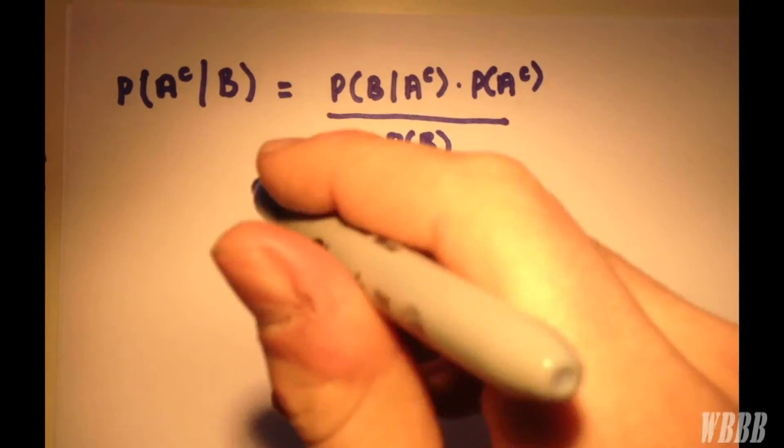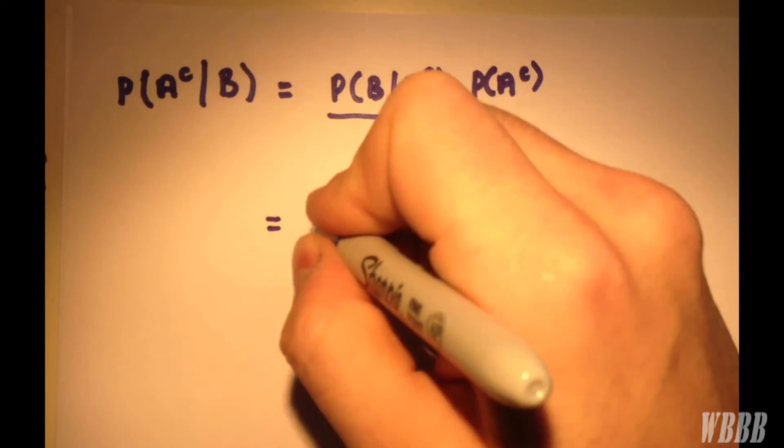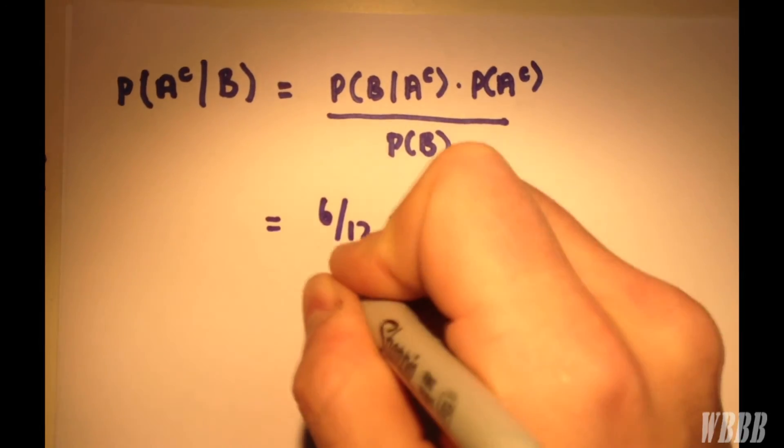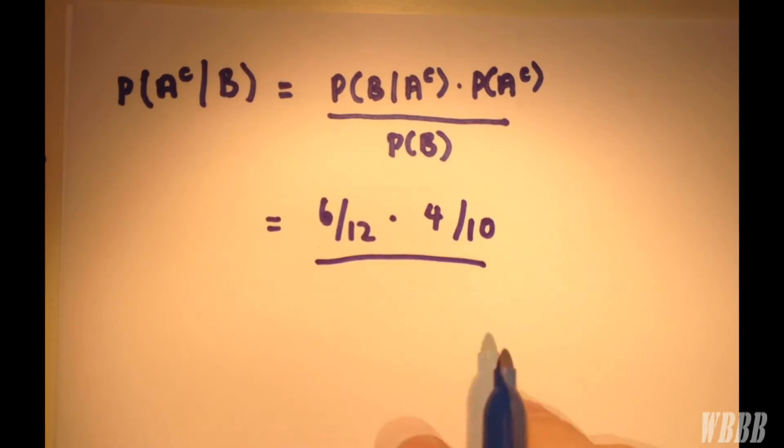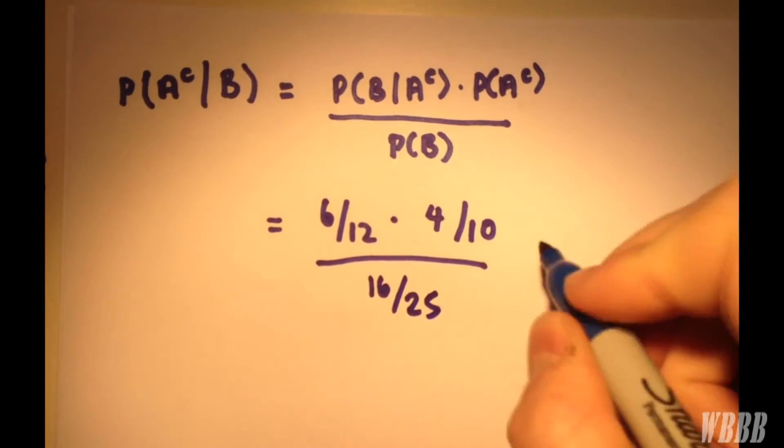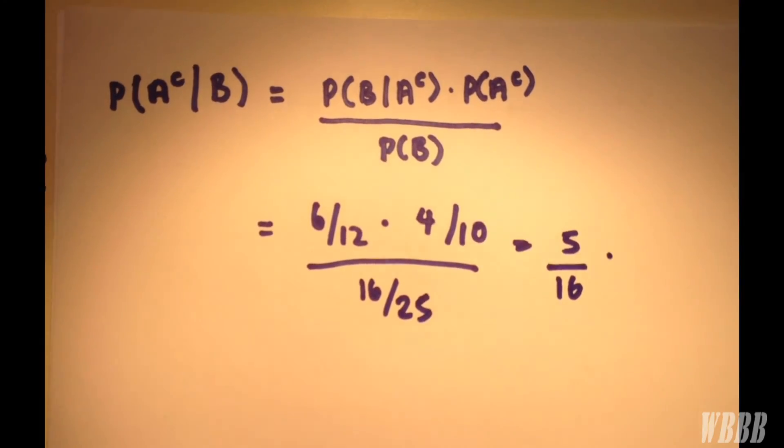Now it's simply a case of plugging in what we worked out on the previous page. We have 6/12 multiplied by 4/10. Given that we worked this out in the last answer, we have 16/25. That provides an answer of 5/16. It's as simple as that.